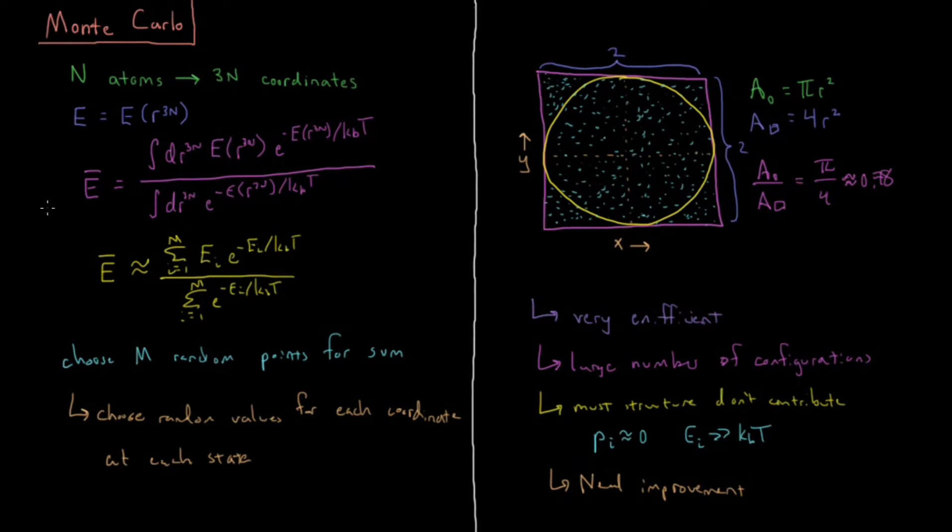So what we can say here is that we can say that the value of pi is pi is approximately four times the percent that are inside the circle. So the probability of being inside the circle, the A circle over A square is equal to, pi is equal to four times that value.